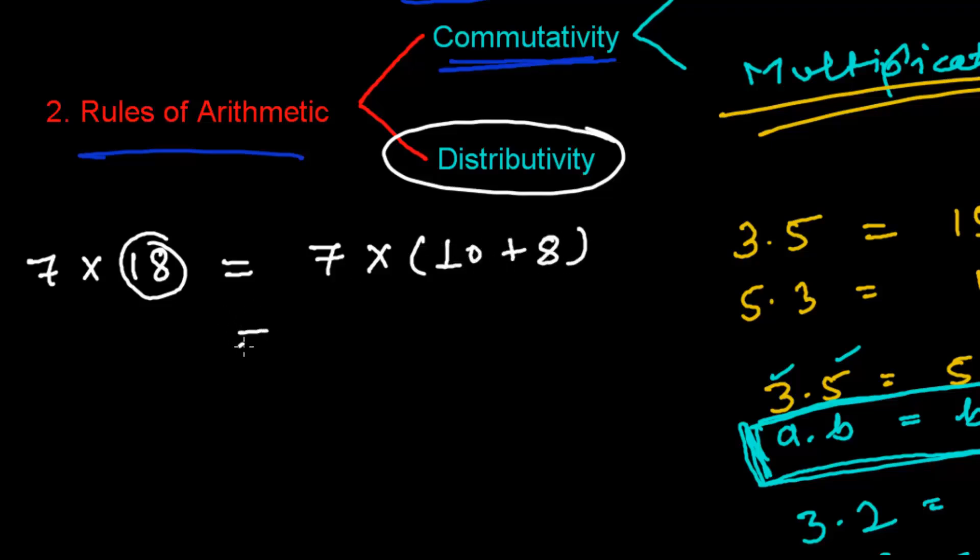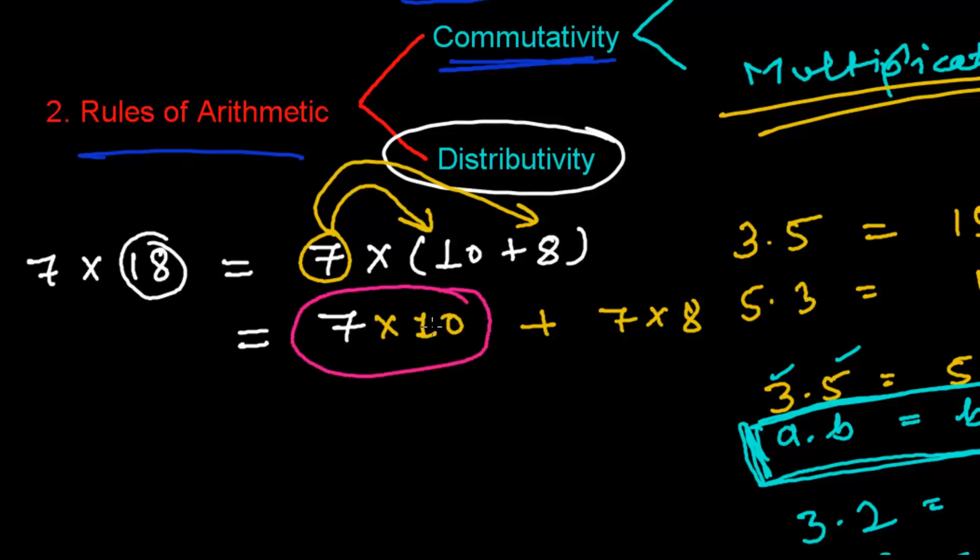And then what I used to do, I used to distribute. I used to multiply 7 to 10, and again this 7 used to multiply 8. So 7 times 10 and then plus 7 times 8. So this is how I used to distribute, because I know 7 times 10 and I know 7 times 8, but I didn't know 7 times 18.